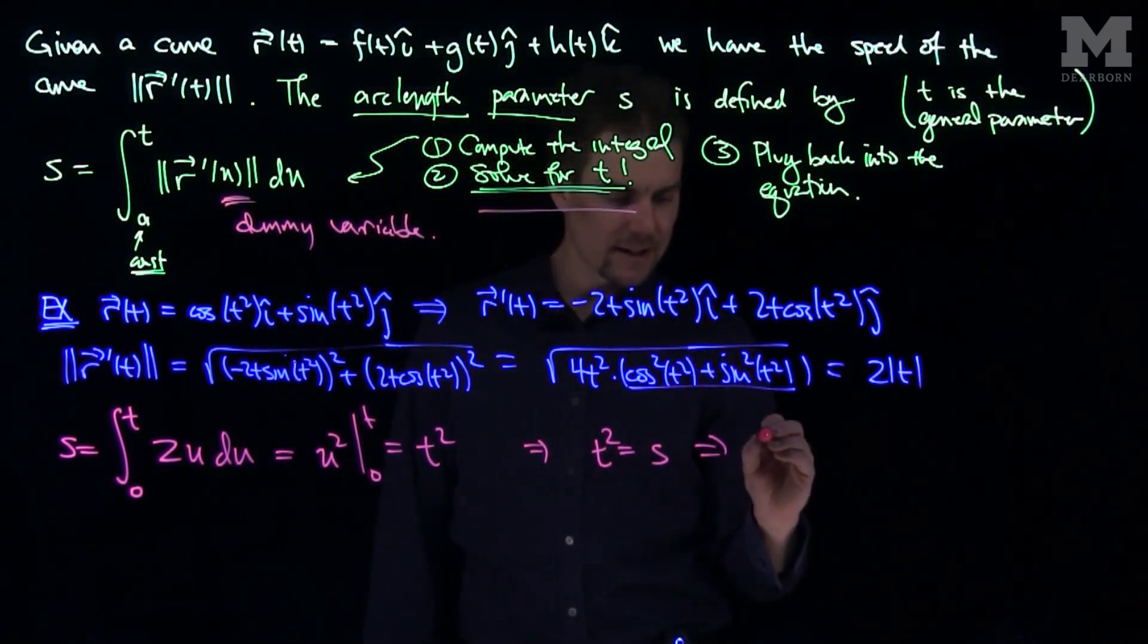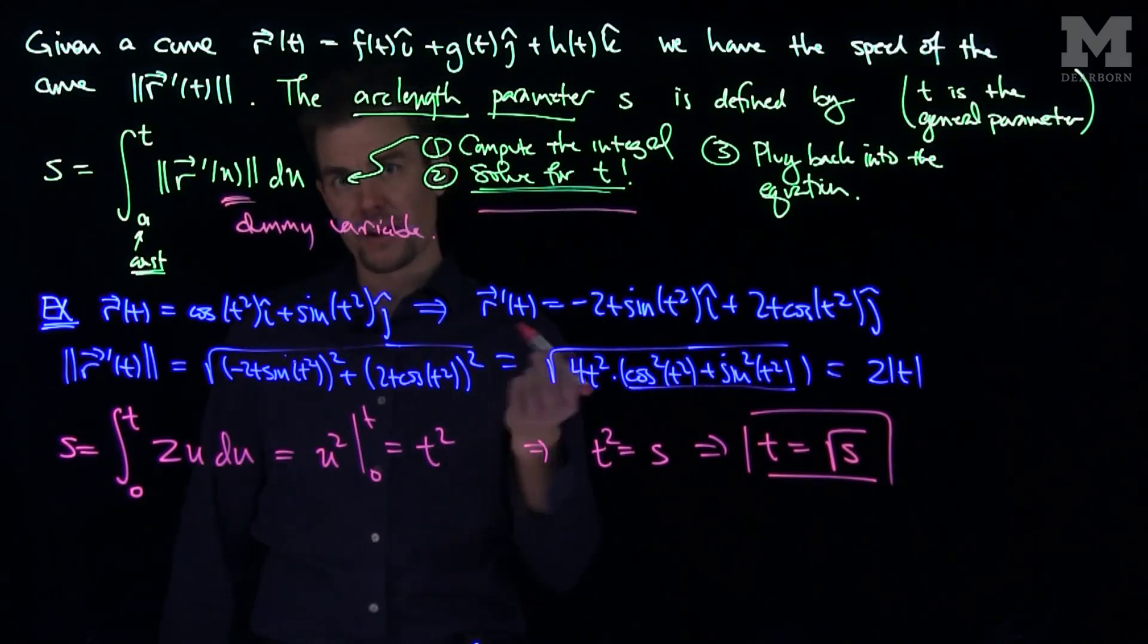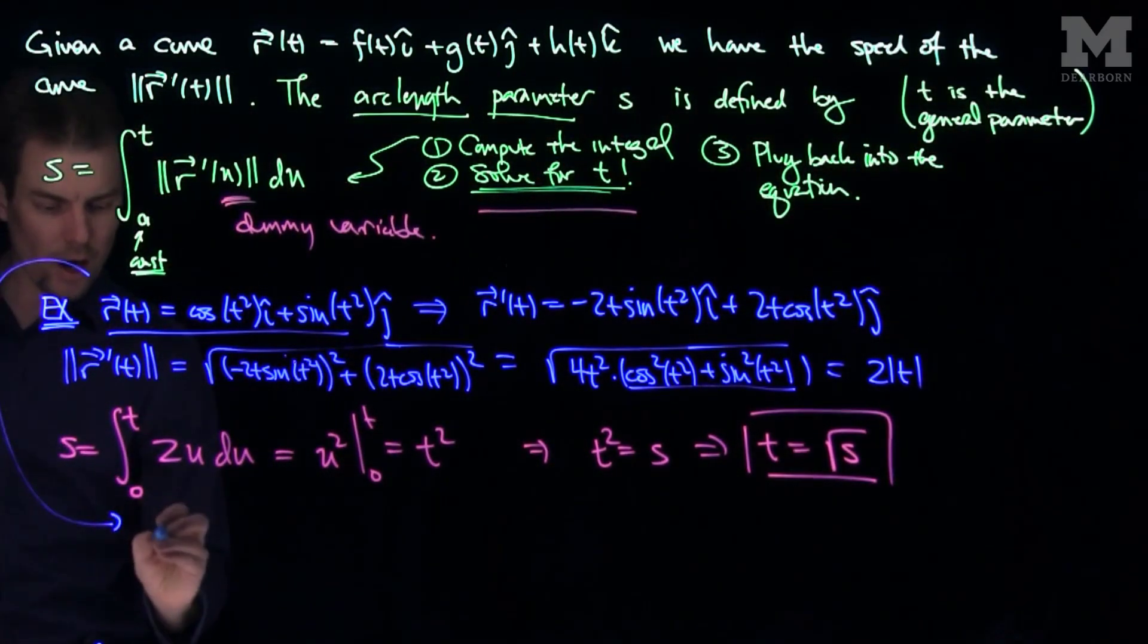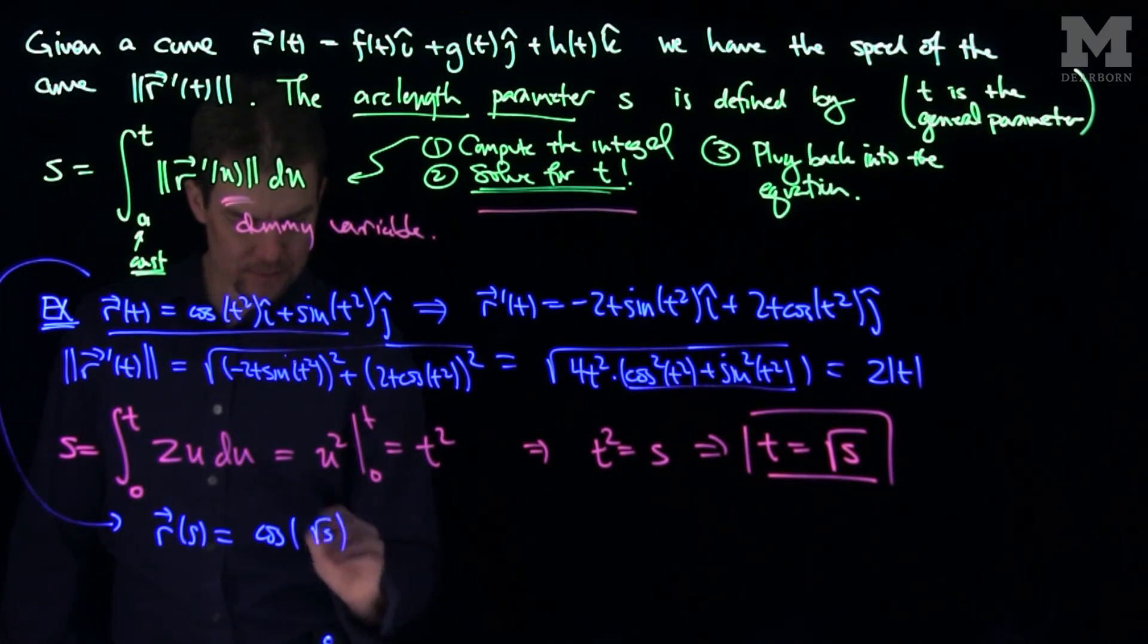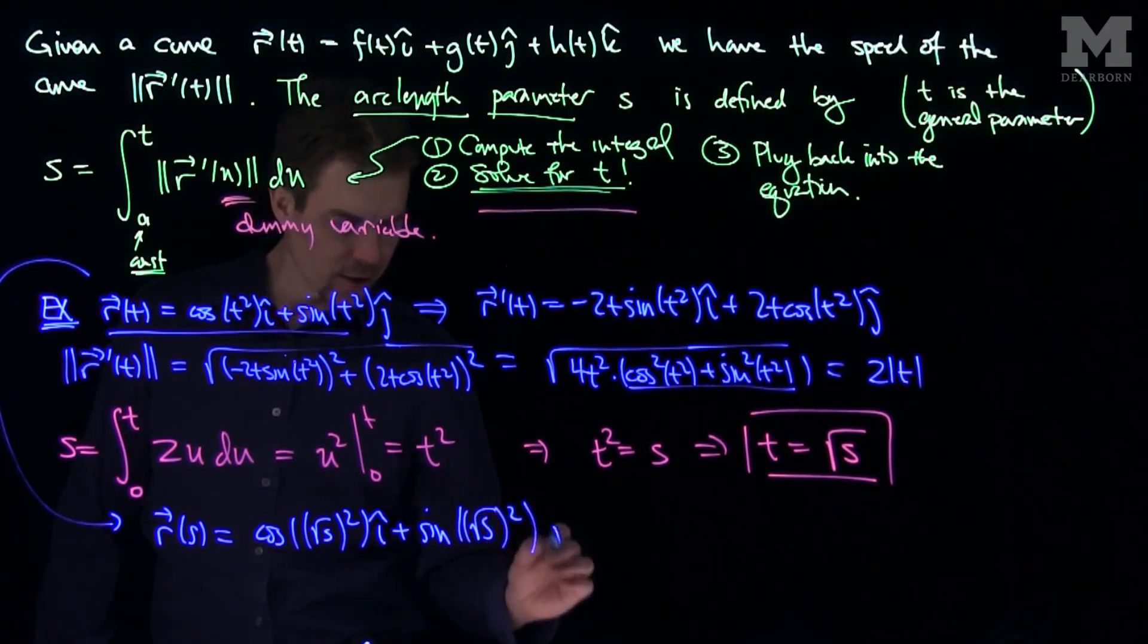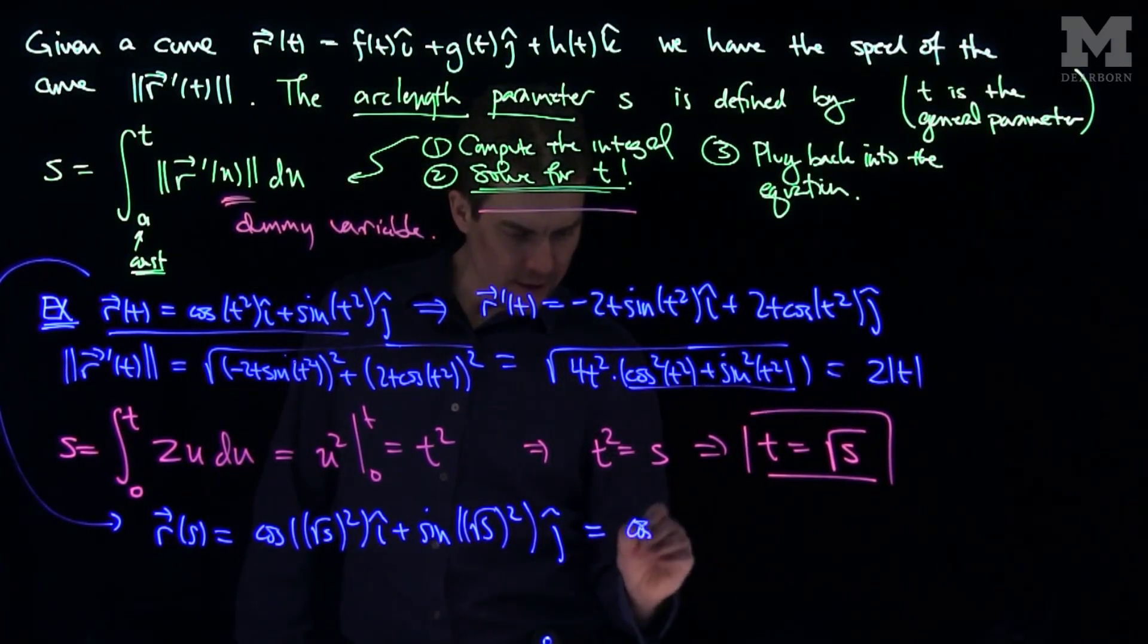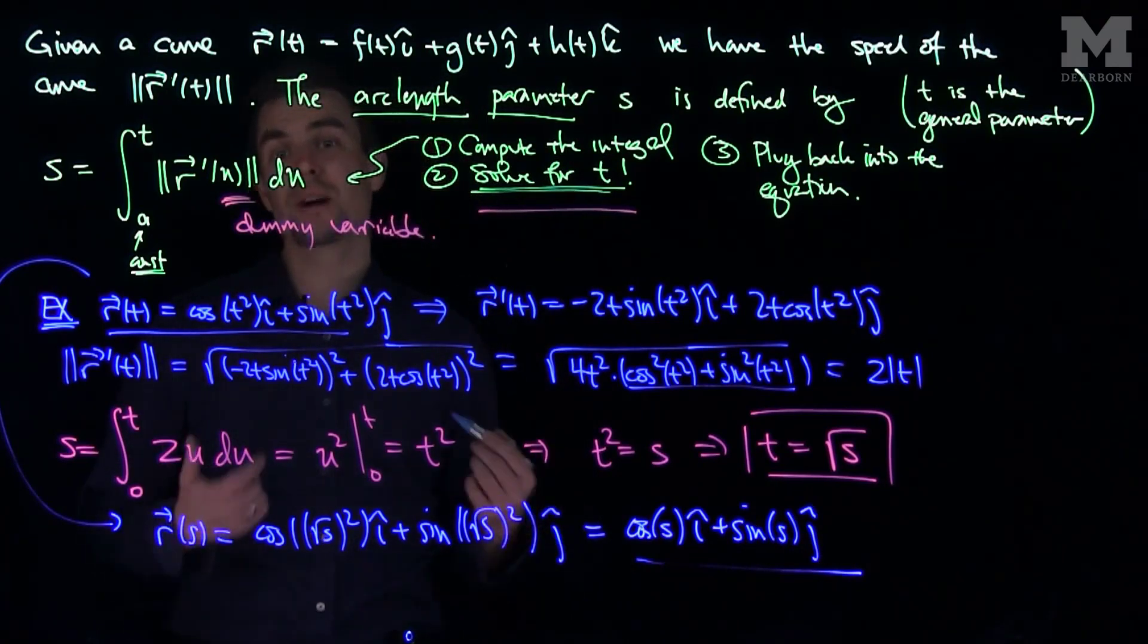Therefore, if I solve for t, I'll have that t equals plus or minus the square root of s. We'll choose just the positive square root of s since I'm only considering positive values of s or t. Now we plug it back into our curve. Our original R(t) was this, so R as a function of s instead of t will be cosine of t squared, so that's cosine of root s squared i-hat, plus sine of root s squared j-hat, which is just equal to cosine of s i-hat plus sine of s j-hat. This is our unit speed parameterization.